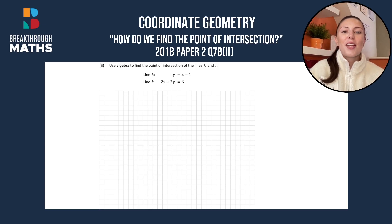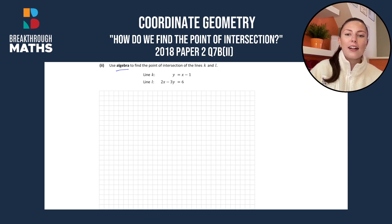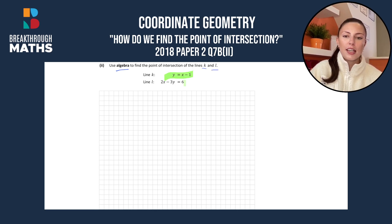Hey guys, it's Jennifer from Breakthrough Maths and welcome to this video on how to find the point of intersection. Here we're told we have to use algebra to find the point of intersection of the lines k and l. We can see that we're given their equations: k is y = x - 1 and line l is 2x - 3y = 6.